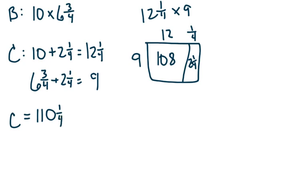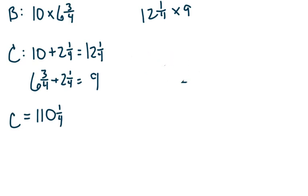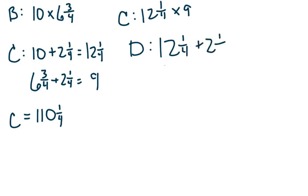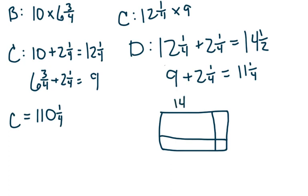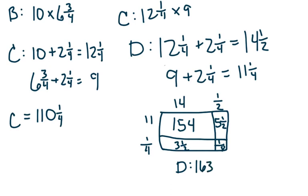Now I'm going to take my twelve-and-one-fourths and nine — those were for C — and for D: twelve-and-one-fourths plus two-and-one-fourth, and nine plus two-and-one-fourth. We get the dimensions of fourteen-and-one-half by eleven-and-one-fourths. Let's draw the rectangle for that. When I add all those together, the area of D is one-hundred-sixty-three-and-one-eighth.